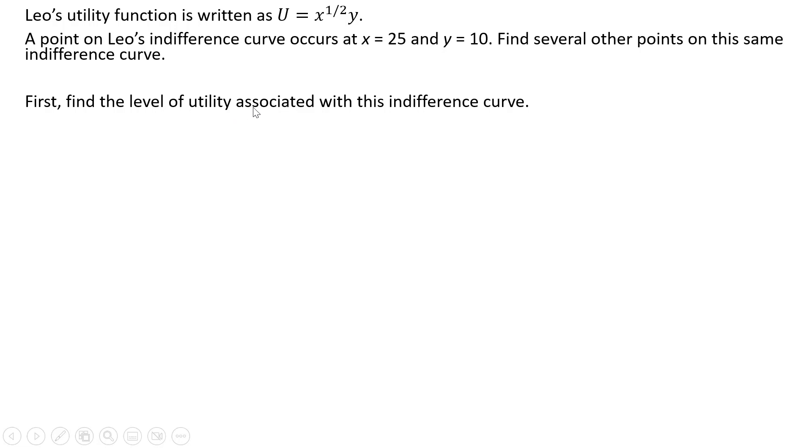First, we're going to find the level of utility associated with this indifference curve. We're going to take our utility function and for x plug in 25, and for y plug in 10. The square root of 25 is 5, and then we multiply that by 10. We get a utility of 50. So to find some points on Leo's indifference curve, we have to find where utility equals 50. Leo is on an indifference curve where U equals 50.